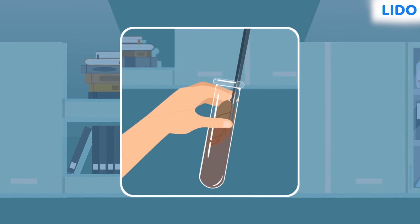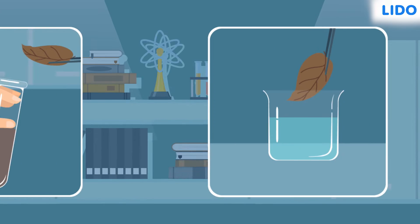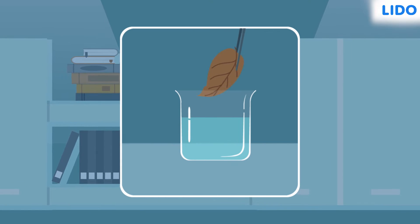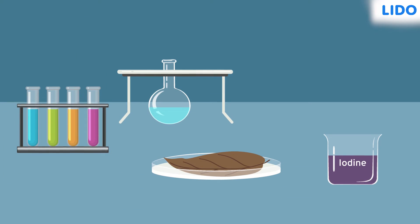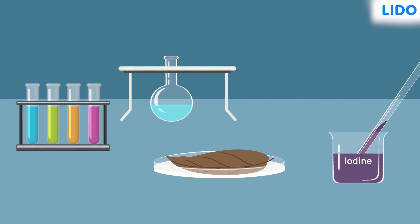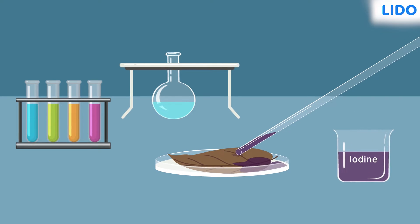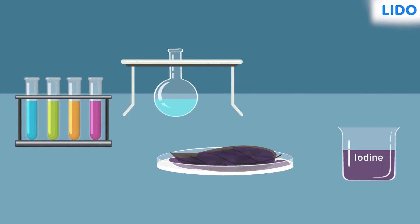After the leaf became pale, Sapna took it out, washed it with warm water and placed it on a dish. Then, she put a few drops of iodine on the leaf. The leaf turned blue-black.